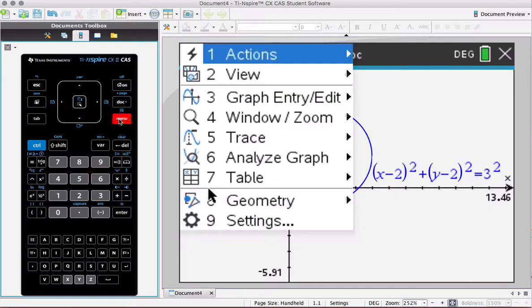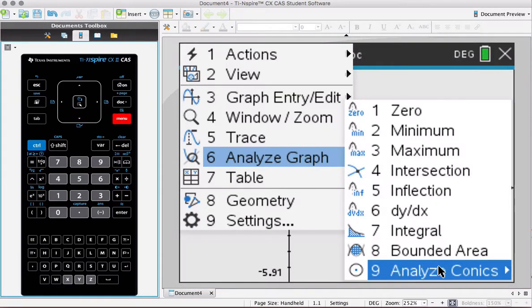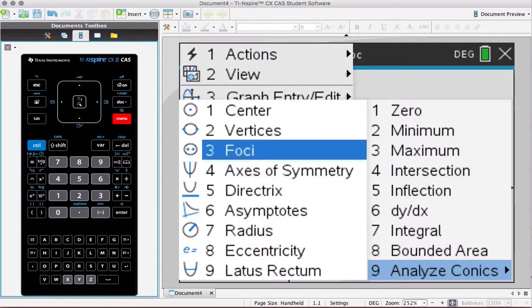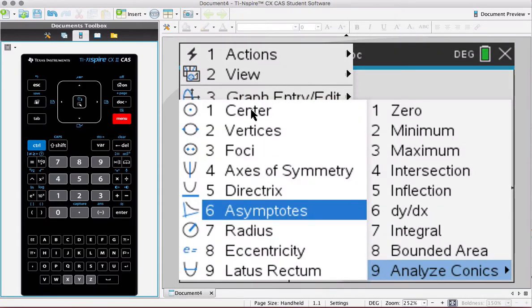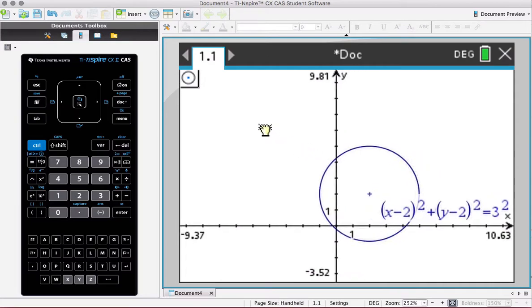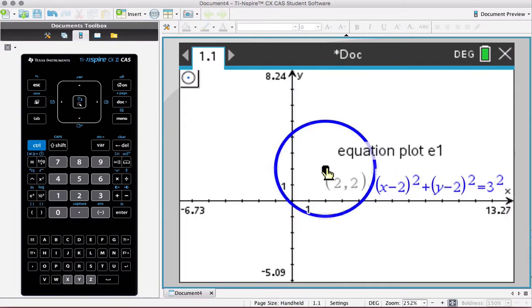I could go menu, I could go analyze graph, analyze conics and I could use what else could I use, let's use the center. I could go to the center and it would tell me that it's 2, 2 just by clicking on it it'll stay there.